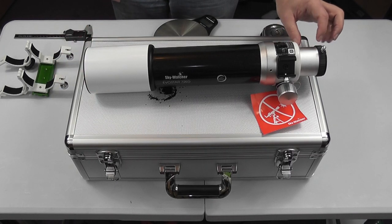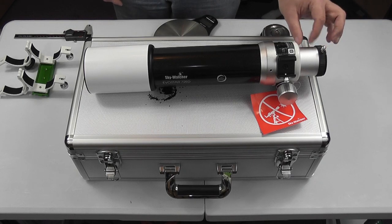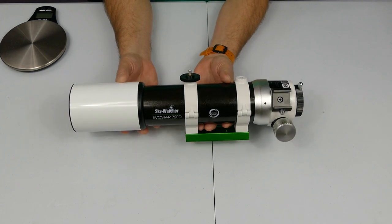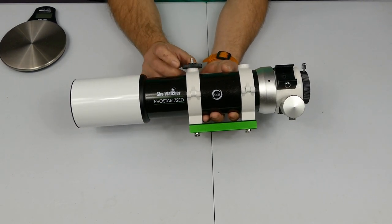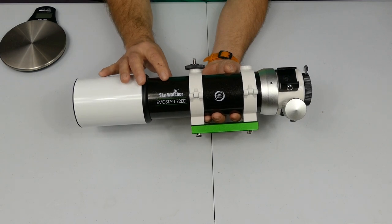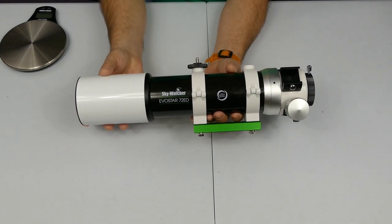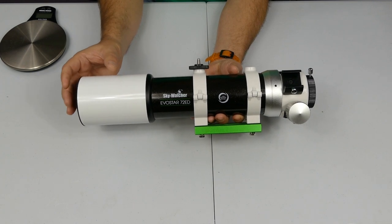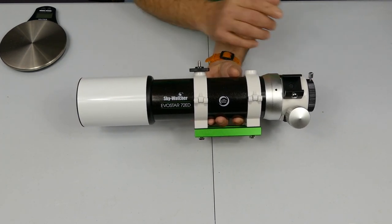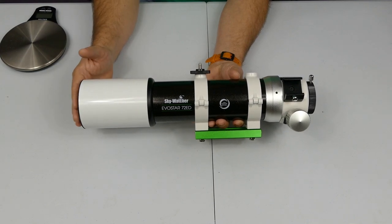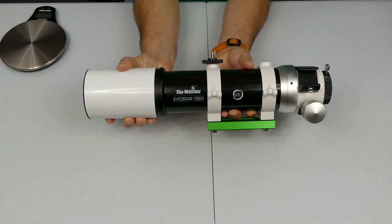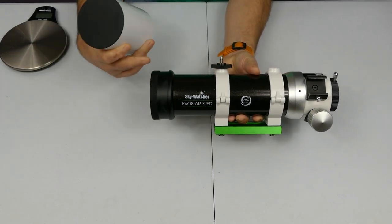The first thing to stress, and it's probably hard to understand unless you've had one of these in your hands, is just how light and compact and tiny this thing is. From the fully collapsed focus tube to the end of the dew shield is only 420 millimeters, and the dew shield slides off quite easily, it's just a felt band around the end of the lens cell there.